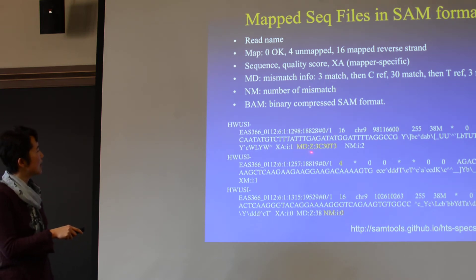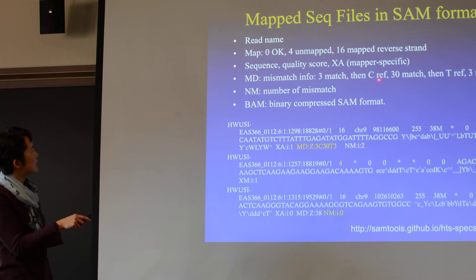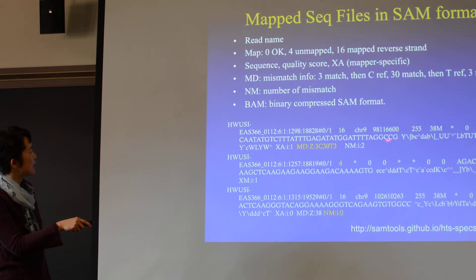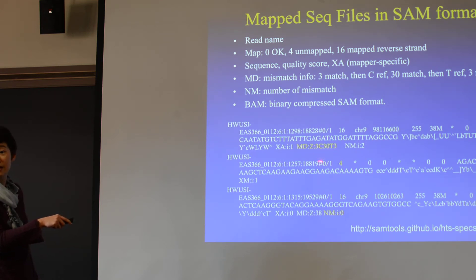For example, the MD string shows we have three matches in the beginning, then the reference is C but our sequence is A — that's a mismatch. Then there are 30 nucleotides matching the reference. Then the reference is T but our sequence is G. Then the remaining three match. So for something like MD:Z:38, everything matches. But in this example you can see there are two mismatches in the mapping to the reference genome. This field also captures the total number of mismatches.